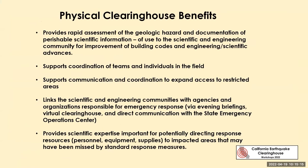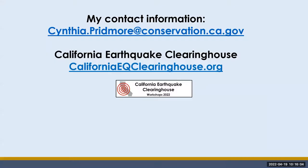The benefits of the California physical clearinghouse include providing rapid assessment of geologic hazards and documentation of perishable scientific information useful to the scientific and engineering community for improvement of building codes and scientific advances. It supports coordination of teams and individuals in the field, communication and coordination to expand access to restricted areas, and links the scientific and engineering communities with agencies responsible for emergency response. It also provides scientific expertise important for potentially directing response resources such as personnel, equipment, and supplies to impacted areas that may have been missed by standard response measures.